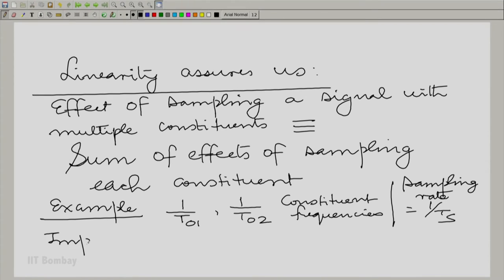So, constituents are these. I am talking about the constituent frequencies, and the sampling rate is 1/Ts. Then, the impostors as we might call them are as follows: 1/Ts minus 1/T01, 1/Ts minus 1/T02, 1/Ts plus 1/T01, and so on, a combination of all these impostors.